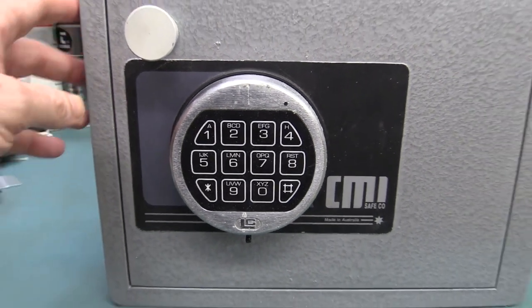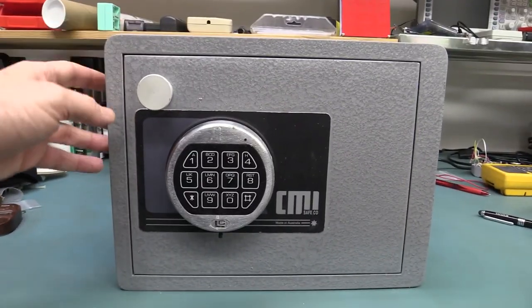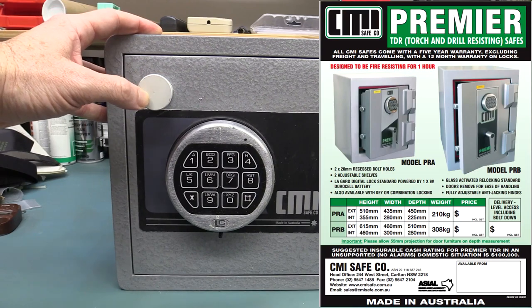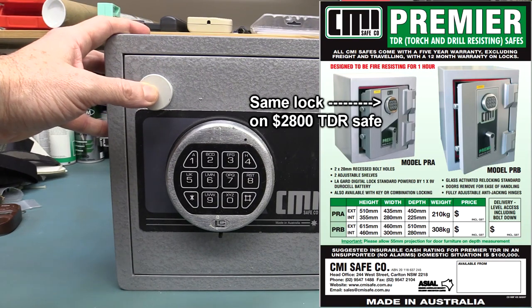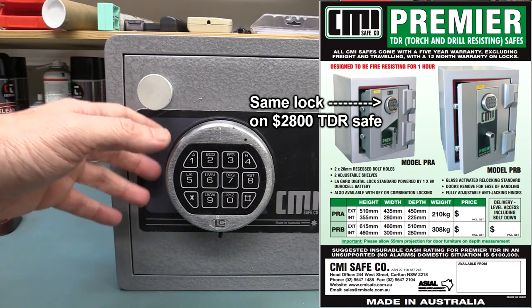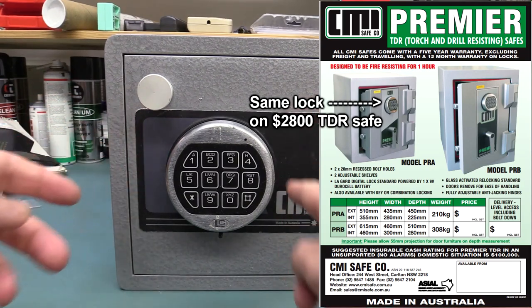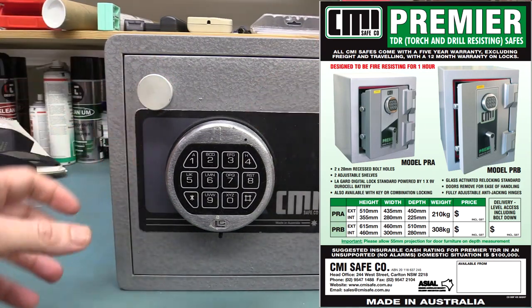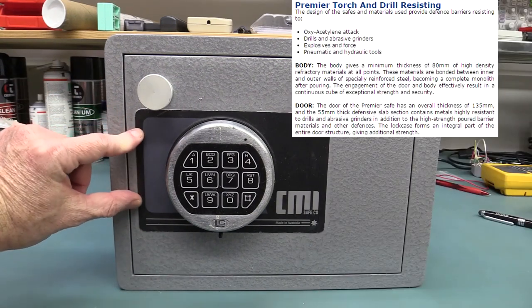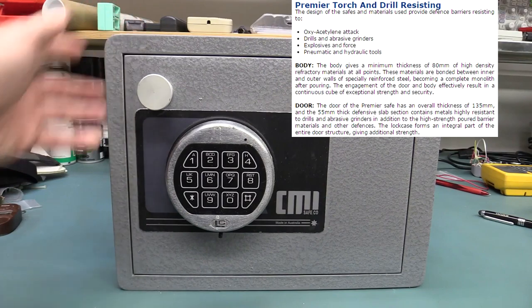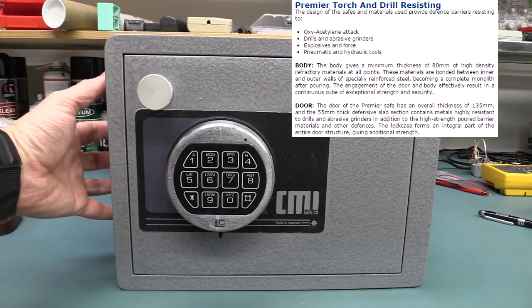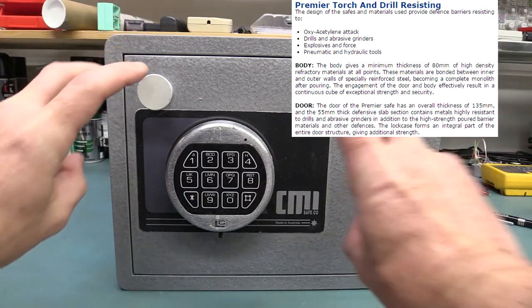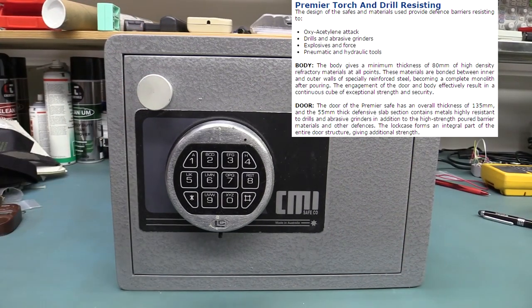Really, if you're interested in what are actually good safes, if you want a real proper one, you need one what's called a TDR safe. TDR stands for Torch and Drill Resistant. It's got anti-manganese drill plates, a glass re-locker in there. So if you try and drill through to access the solenoid mechanism, it shatters the glass plate and lockers come in place. This one only has the one deadbolt here. Others have multiple deadbolts and anti-cutting, anti-grinding materials built into the steel walls. So if you want a real safe in quote marks, you need a TDR class safe.